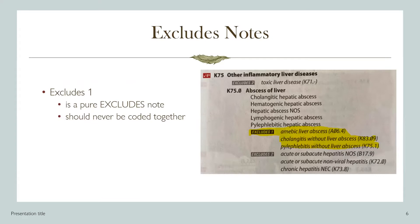Excludes notes are the opposite of includes notes. They identify conditions that are similar but independent of each other. The ICD-10-CM code set has two types of excludes notes: excludes one and excludes two. The excludes one note is a pure excludes note, meaning that the condition listed under the excludes one note and the coded condition are mutually exclusive and should never be coded together. For example, if a patient has a congenital form, they cannot have an acquired form of a condition — those two could never be coded together.